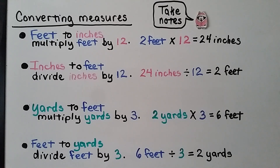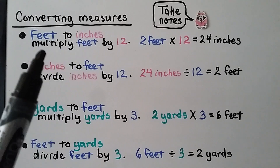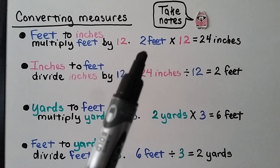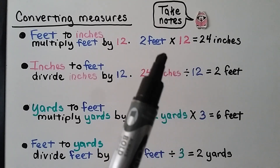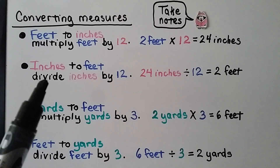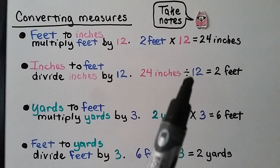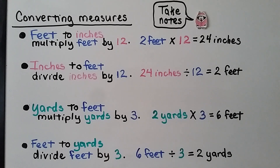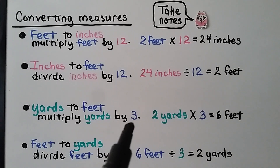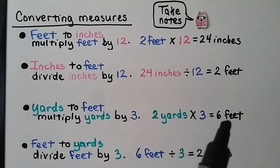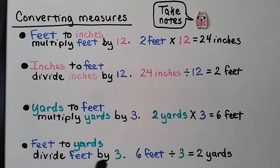Here is a summary for converting measures. To change feet to inches, multiply the feet by 12: two feet times 12 equals 24 inches. To change inches to feet, divide the inches by 12: 24 inches divided by 12 equals two feet. To change yards to feet, multiply the yards by three: two yards times three equals six feet. To change feet to yards, divide the feet by three: six feet divided by three equals two yards.